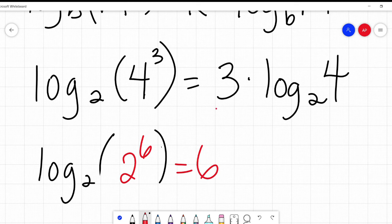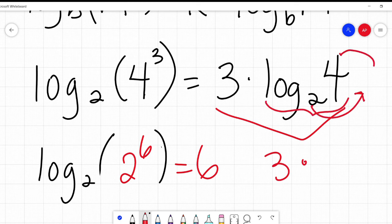Over here we have 3 times, and if I just do this bit right here, 2 to what power equals 4? 2. So 3 times 2, voila, 6. That's our third rule there.